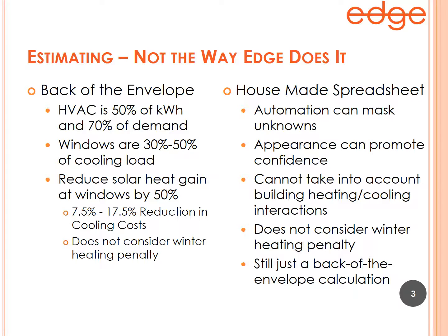You can start to mathematically calculate a 7.5% to 17.5% reduction in cooling costs just by multiplying these rules of thumb on the back of the envelope. But this doesn't consider the winter heating penalty.